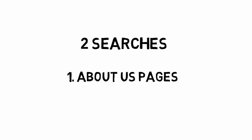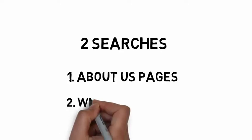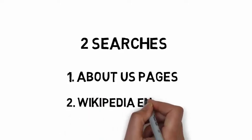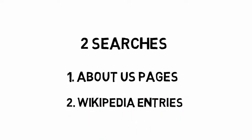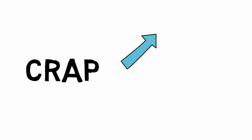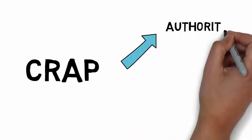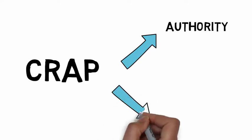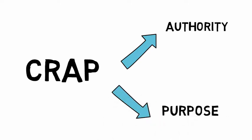First, we will look at the About Us pages on both Institute websites. And second, we will also look at the Wikipedia entries for both organizations to find out more about the people involved. These two searches overlap the authority and purpose criteria, but can give us more information to help us think critically about the potential biases of both organizations.